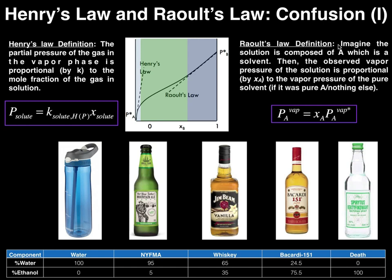Also Raoult's Law's definition: we're going to imagine the solution is composed of A, which is the solvent. The observed vapor pressure of the solution is proportional by the mole fraction of the A solvent to the vapor pressure of the pure solvent, assuming it was all ethanol. So the vapor pressure of ethanol, assuming it was the solvent, is equal to its mole fraction times the vapor pressure of pure ethanol — something you can look up in the table.